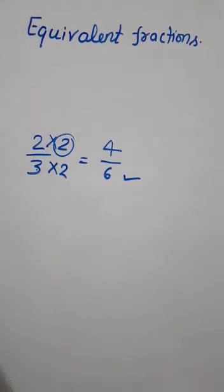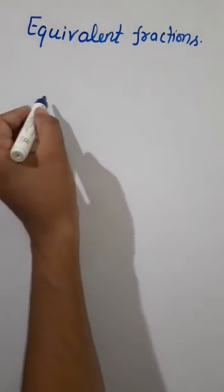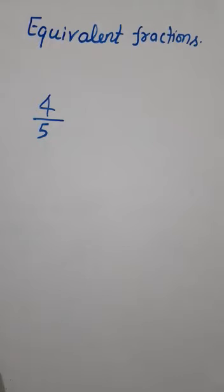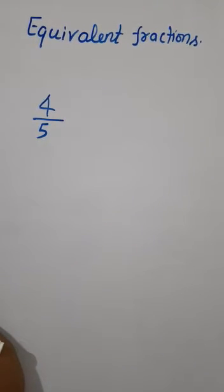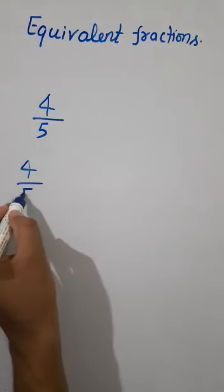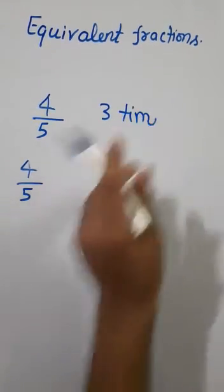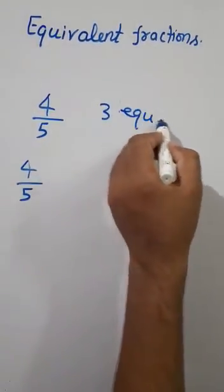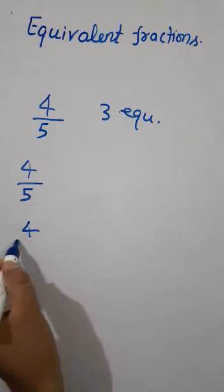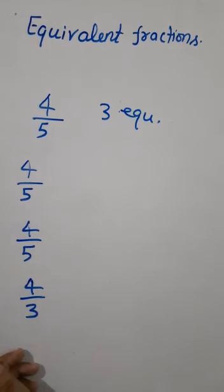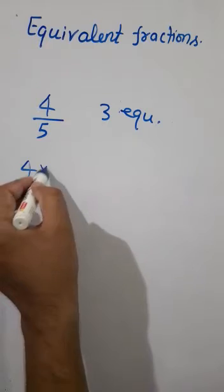Now suppose the question asks: find three equivalent fractions of a given fraction. The fraction is 4/5 and we need three equivalent fractions. We write 4/5 three times. For finding equivalent fractions, we start multiplying the numerator and denominator by 2, then 3, then 4.